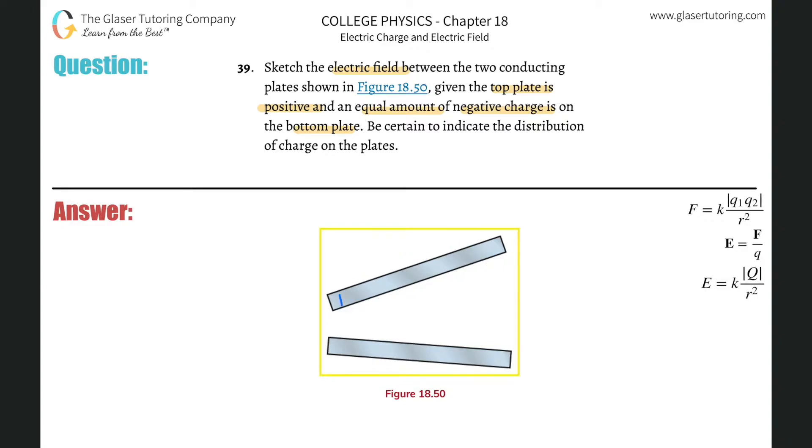All right, so basically the top plate is positive. If the top plate is positive, we're going to have an excess of positive charge. Let's draw in one, two, three, four, five, let's say six. Are they going to be all aggregated together or are they going to separate as far apart as possible? Well, they're probably going to separate as far apart as possible because likes repel.